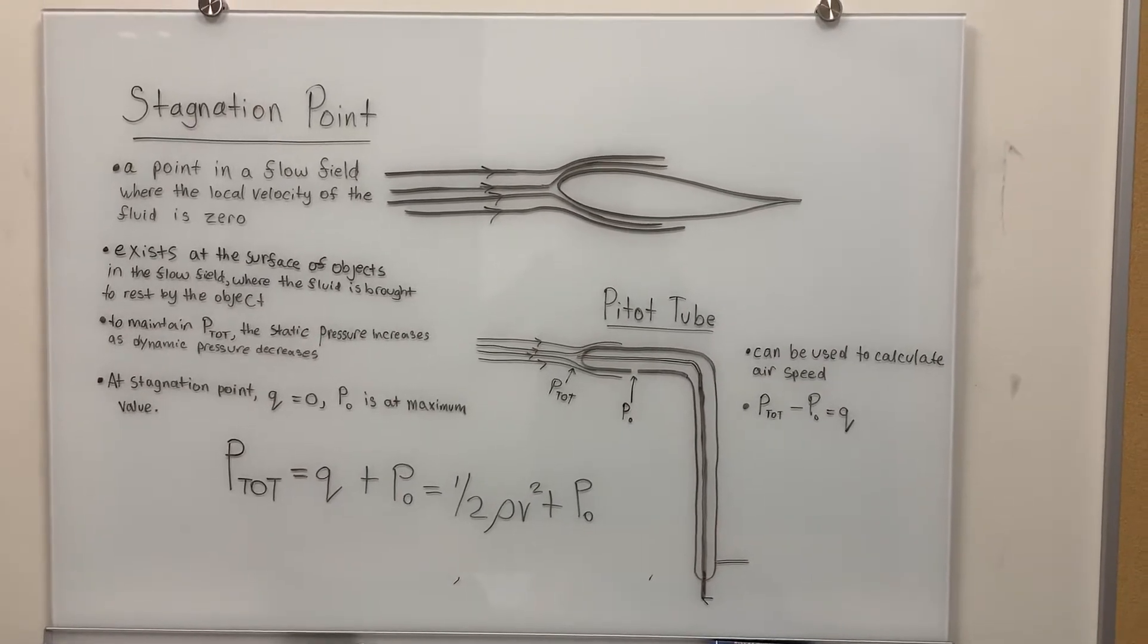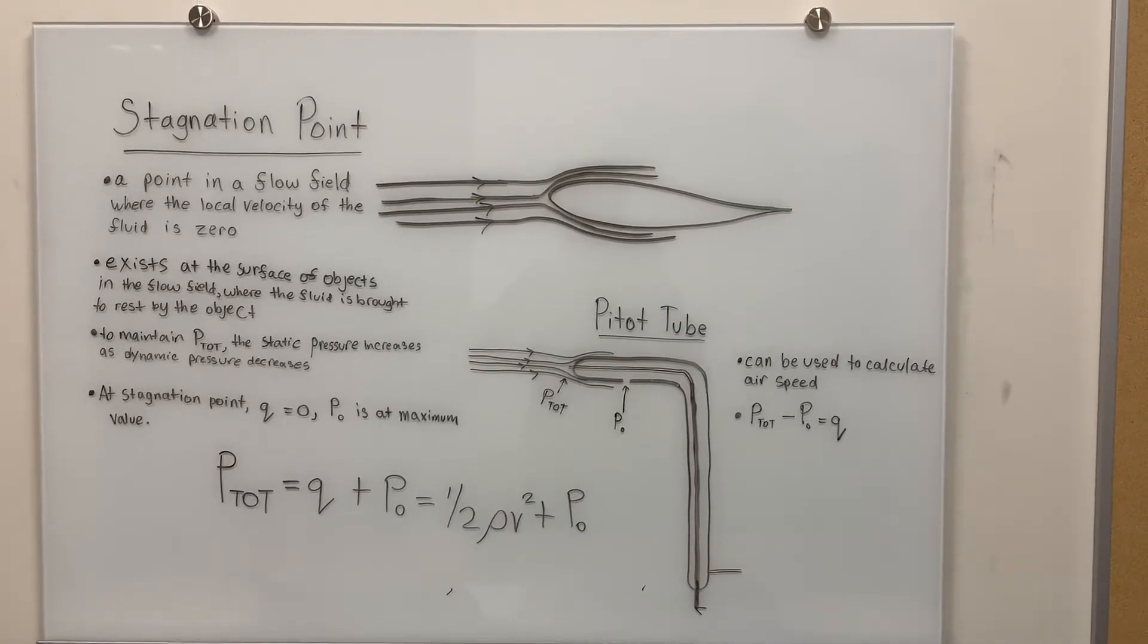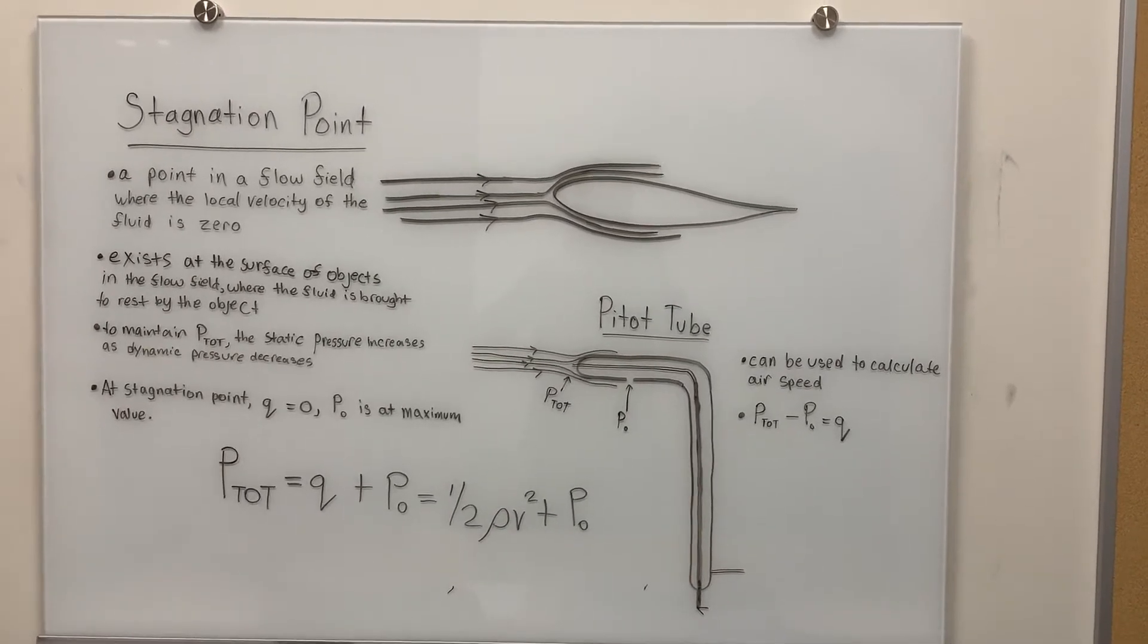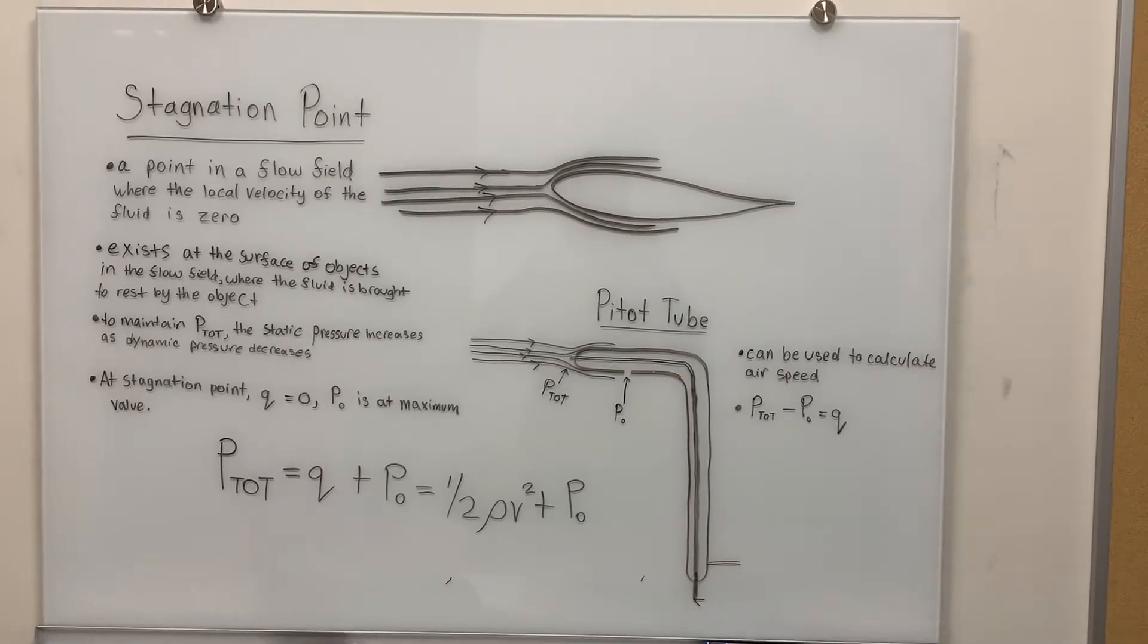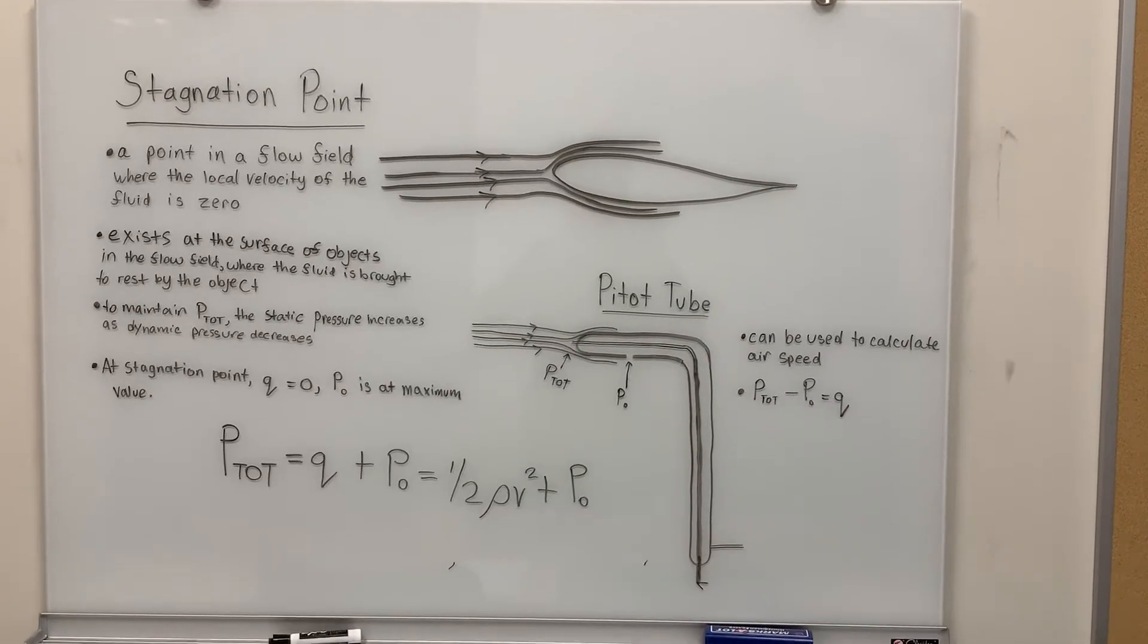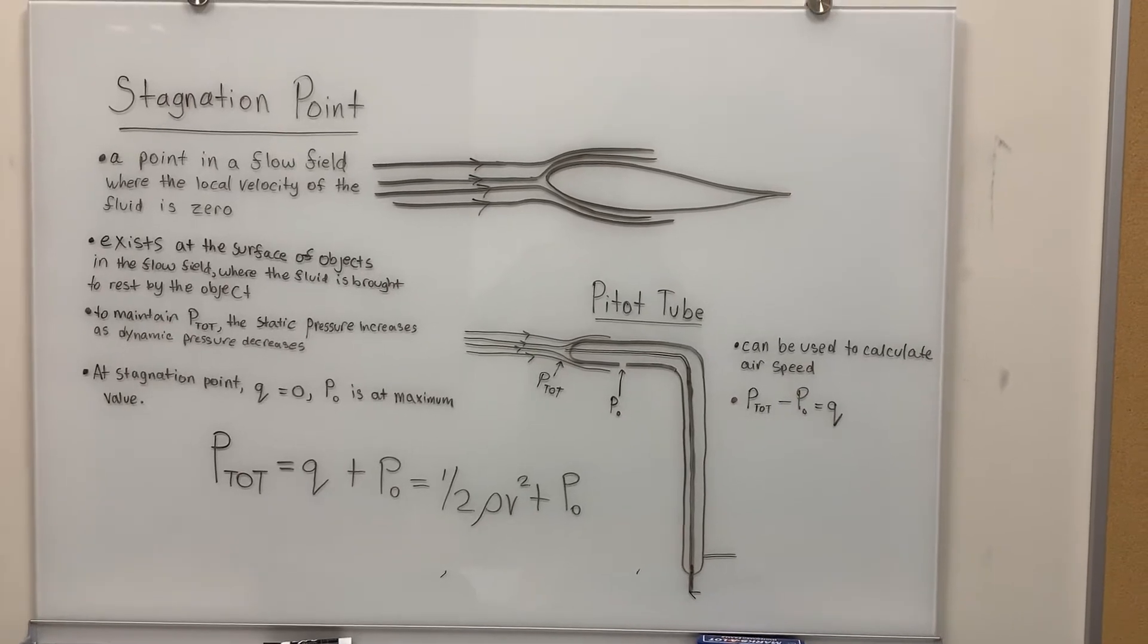With knowledge of Bernoulli's equation, which states that the total pressure is equal to the dynamic pressure plus the static pressure, we can deduce that the static pressure at the stagnation point is at its maximum value.